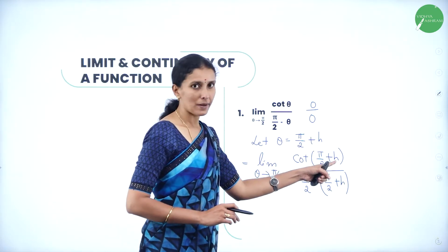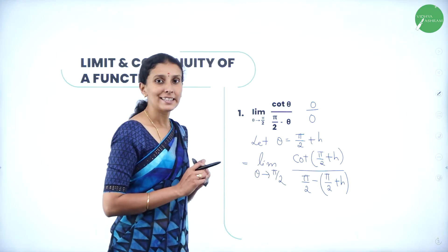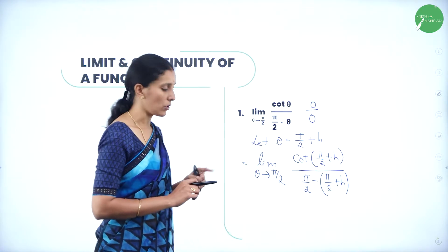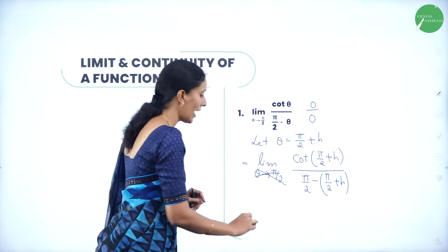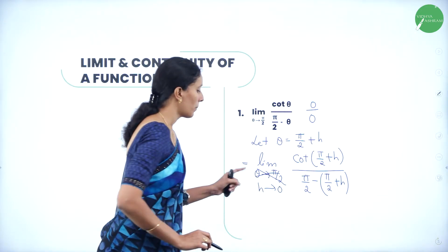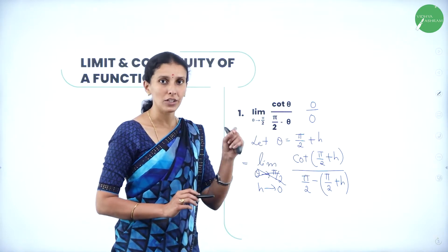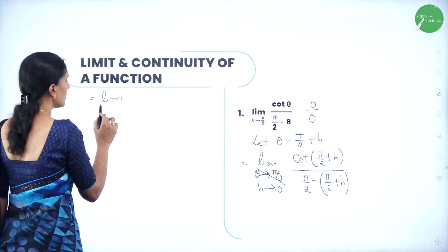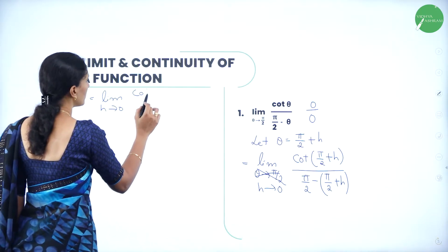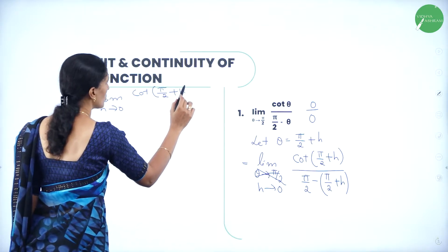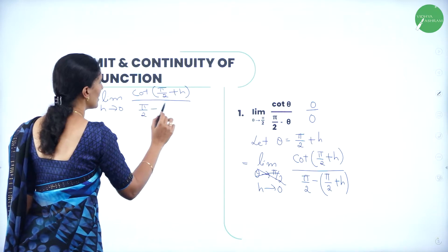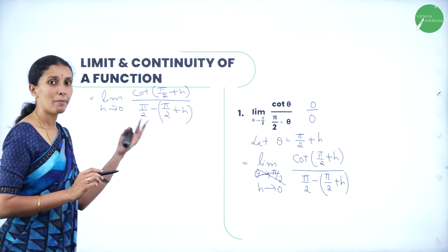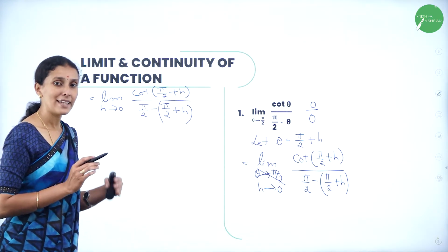Now, whenever θ is replaced with h, we cannot write θ tends to π/2. You can see that if θ = π/2 then h tends to 0. So instead, we write h tends to 0. Therefore we have: limit as h tends to 0 of cot(π/2 + h) divided by (π/2 - (π/2 + h)). Now let us solve this.